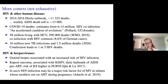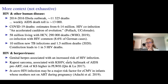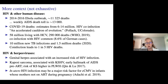Genital herpes are associated with an increased risk of HIV infection. Kaposi's sarcoma, associated with KSHV, is an early hallmark of AIDS pre-ART, and the risk of KS remains higher in people living with HIV. In utero HIV infection may be a major risk factor for congenital CMV in infants whose mothers aren't on ART during pregnancy.